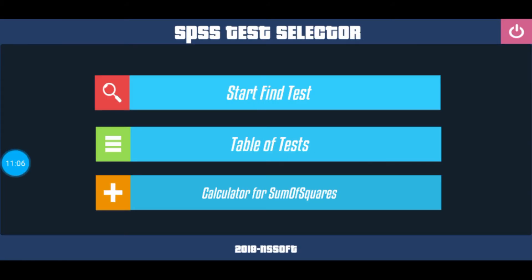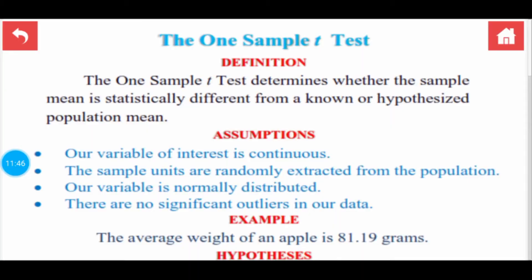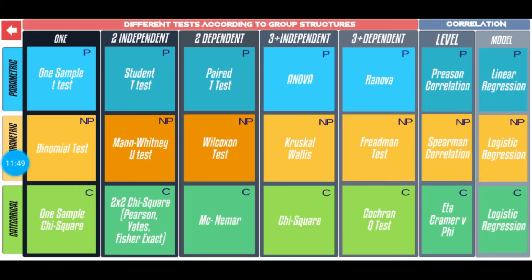On the home screen, the second option is the Table of Tests. Just click on that Table of Tests and you can see the rows and columns. For example, if you have one variable and it is parametric, then it is a one-sample t-test. And if there are two independent variables — the second column, first row, parametric — then it is a Student t-test. This is a very beautiful and useful table for selecting the test for the analysis of your data.